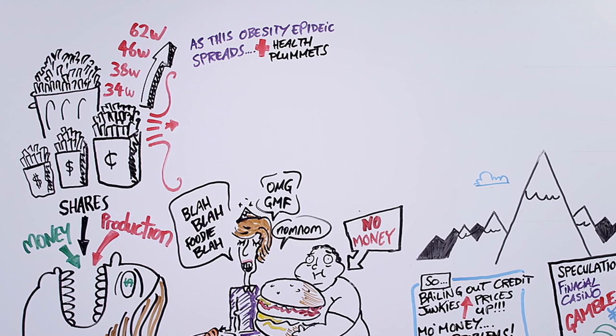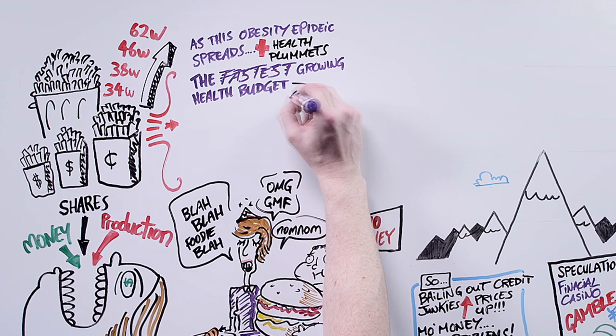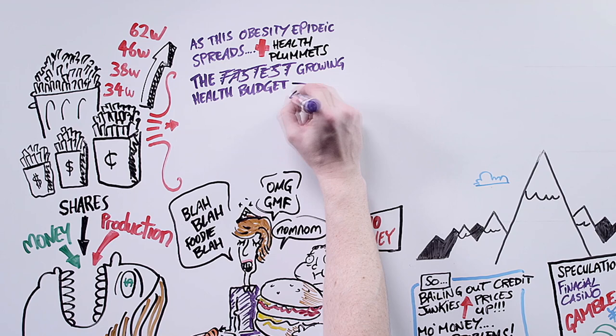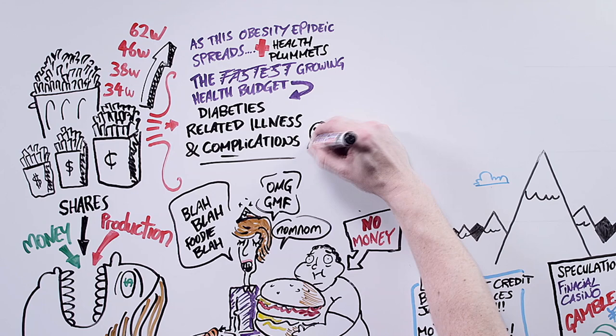As this obesity epidemic becomes more and more widespread the health of the nation plummets and the health cost of the nation rises. Is it any wonder that the fastest growing health budget in the West is the exploding cost of diabetes-related illness and complications?